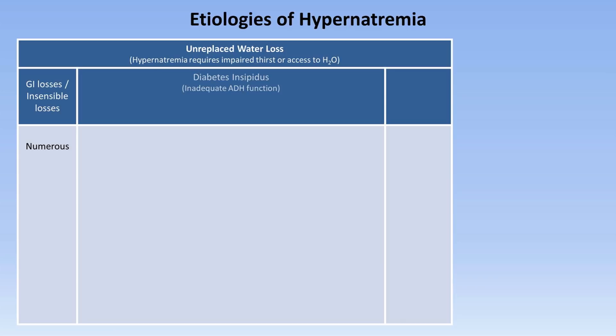The second is diabetes insipidus — a fancy sounding term for any physiologic state in which there is inadequate function of ADH. It shares nothing in common with the much more common diabetes mellitus, other than the fact that both tend to cause excessive urine production, which can lead to hypernatremia when the lost water cannot be replaced.